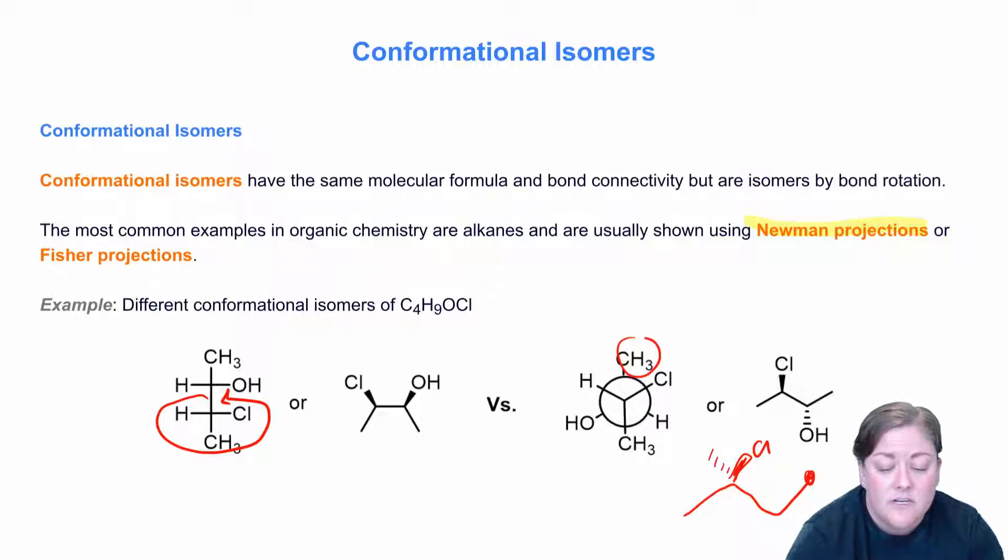That says to me that it's coming out of the page like so, and this here hydrogen is going back. And here I have the OH group going back, and I have the hydrogen coming forward. Now if I was to rotate this carbon-carbon bond here, that would change where all the groups are and give different conformational isomers.